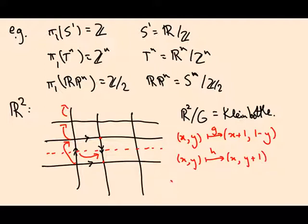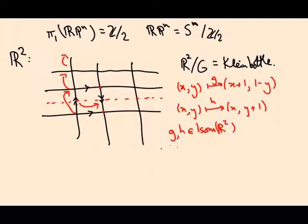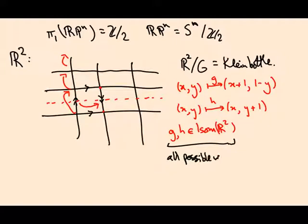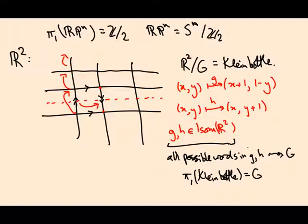So these are two elements in the isometry group of the plane. They generate a group. So if I just take all possible combinations, all possible words in G and H, this gives me a group G. And from what I've said, that quotient of R² by that group is a Klein bottle. So π₁ of the Klein bottle is G, once you've checked that this is a properly discontinuous group action.